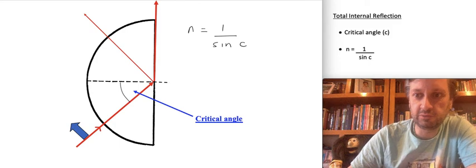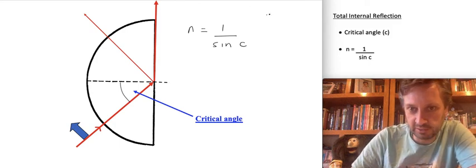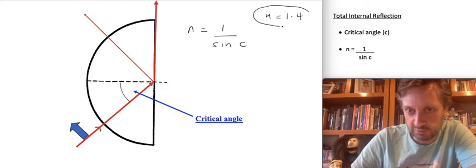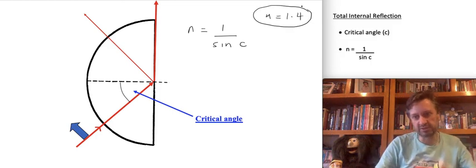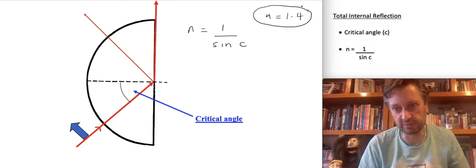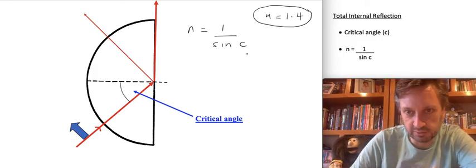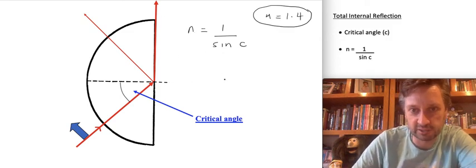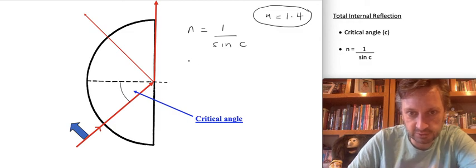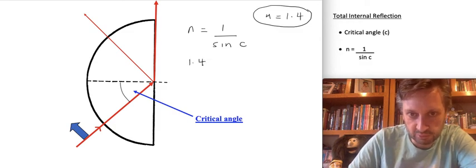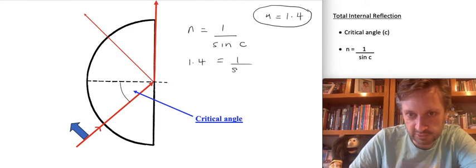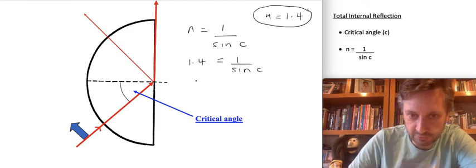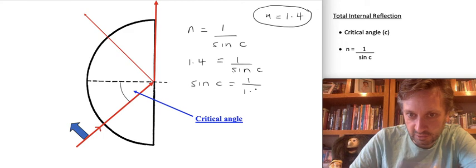Now I know that the refractive index for glass is approximately n equals approximately 1.4. And you remember that n has no unit because it's an index. It's just the ratio of light speeds. So therefore, no unit. So if you know the refractive index is 1.4, we should be able to work out what is the critical angle for this piece of glass. All right, let's substitute in the numbers. n is 1.4 equals 1 over sine c. So therefore, sine c equals 1 divided by 1.4.